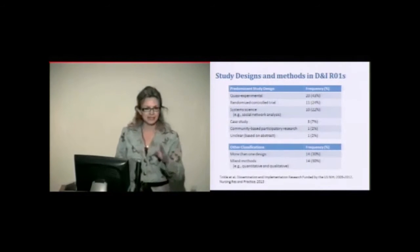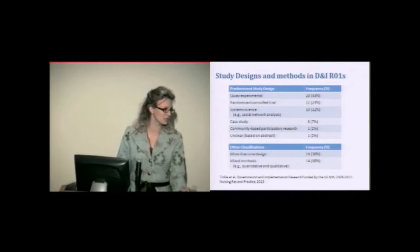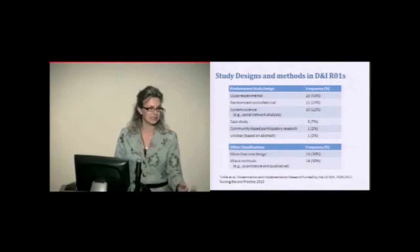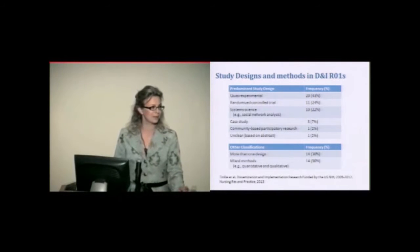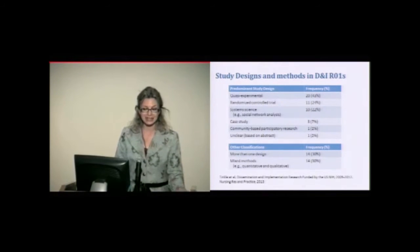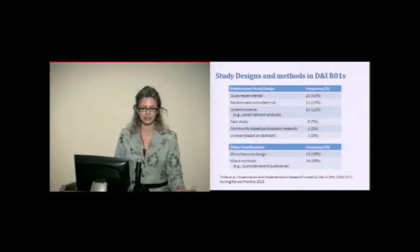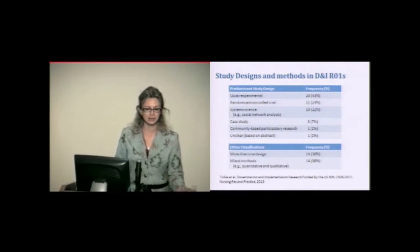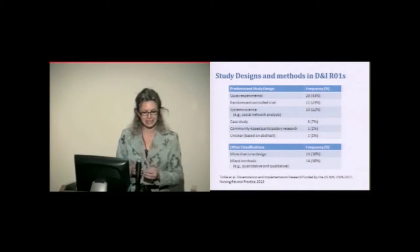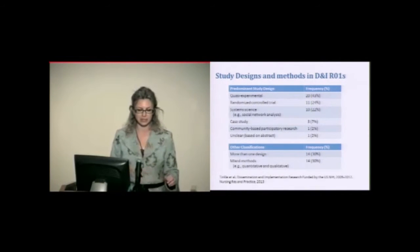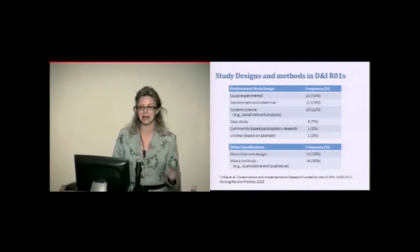Before I do that, I wanted to show you the same study that we keep carrying through the day of the RO1s, DNI RO1s that were analyzed based on the abstracts, and show you what kind of study designs those RO1s used. So the most common was quasi-experimental design, as I mentioned. There's still a large number of randomized control trials used. It's not specified if they are pragmatic or explanatory. System science had a very large number, which is really nice to see, especially they list here social network analysis. There were some case study approaches, CBPR, and then some of them were unclear, one of them, I guess. And then there were a number of studies that had multiple study designs included. And, again, a number of studies used mixed methods, and this is over 46 abstracts, just to remind you.